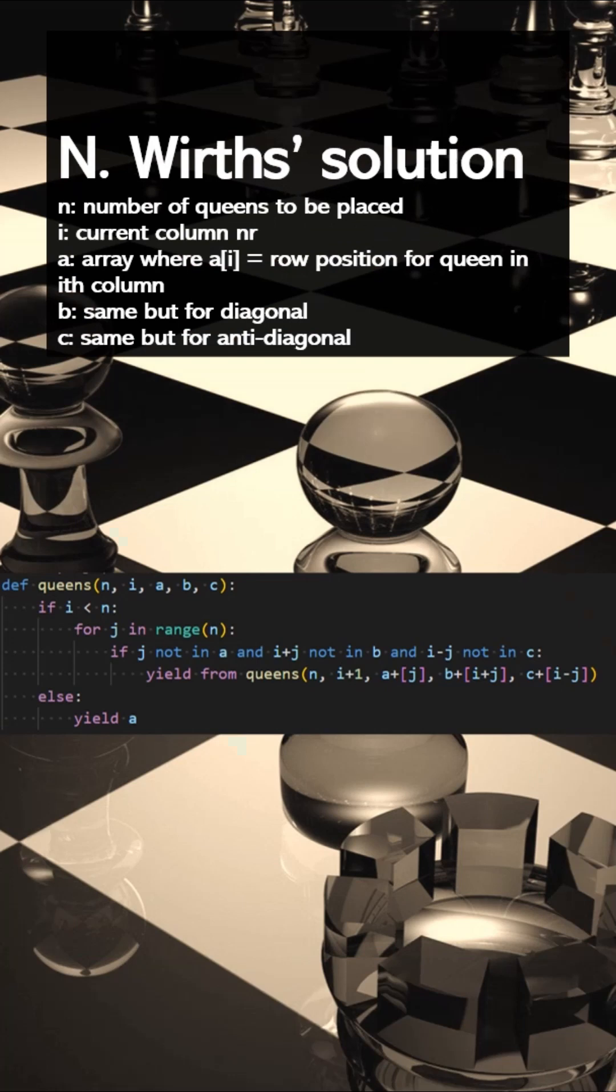This leaves us with a 7-liner in Python. N stands for the total number of queens to be placed, I for the current column we are considering, A, B, and C for row, diagonal, and anti-diagonal numbers of the queens that have been placed.